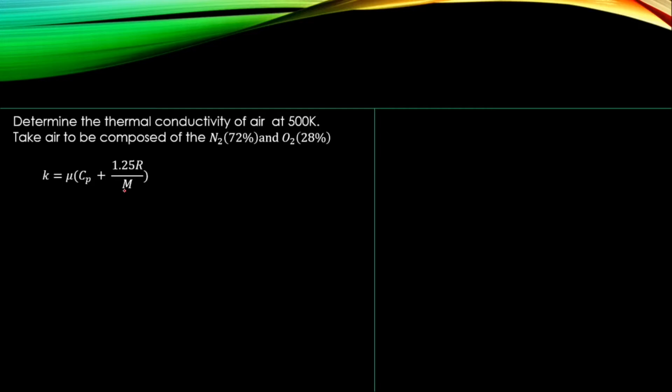If the temperature is given in degrees Celsius, you convert it to Kelvin. We use the polyatomic formula to find the thermal conductivity for each gas individually — nitrogen and oxygen — and then apply the mixture formula.